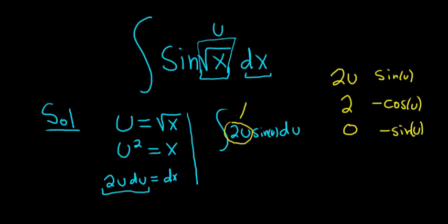So in tabular, you pick the piece that you differentiate, and you just do it. Boom, there it is. You pick a piece, and you integrate it. Boom, there it is. Then you put plus, minus, plus.